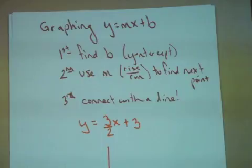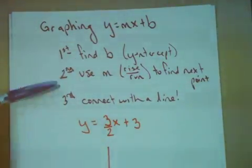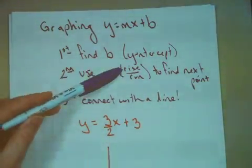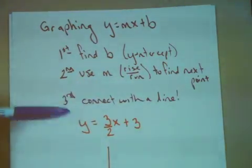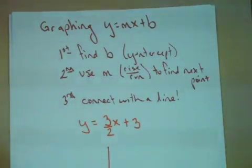Let's practice graphing of the form y equals mx plus b. The first thing you need to do is find your b value. Remember, that's the y-intercept. Second, you use the m, the slope, which we think of as rise over run, to find the second point. And finally, you connect those with a line. Make sure you use a straight edge.